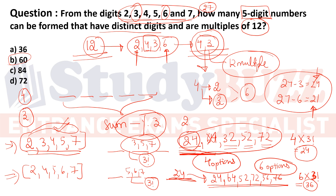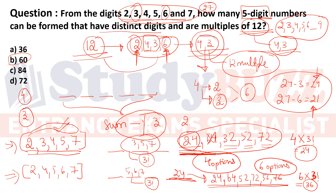You don't need to memorize properties for all numbers — just for 2 through 9 and up to 11. For a multiple of 12, ensure it is a multiple of both 4 and 3. Combining these automatically ensures divisibility by 2 and 6 as well, confirming the number is a multiple of 12. Thank you for watching this video.